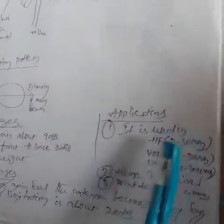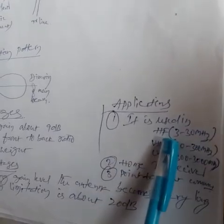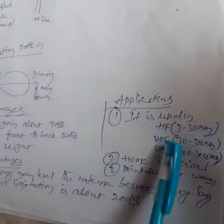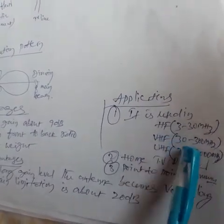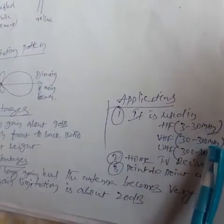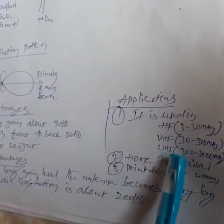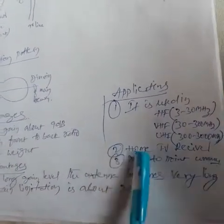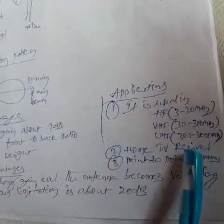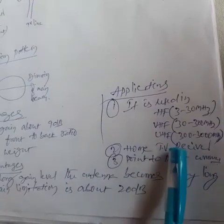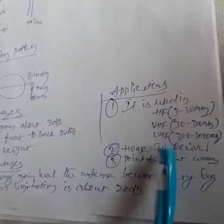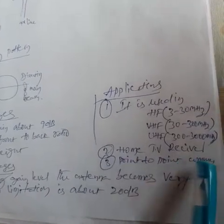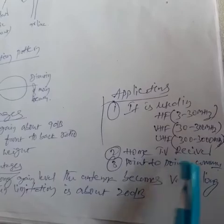Applications: the Yagi-Uda Antenna is used in high frequency (HF), which is 3 to 30 megahertz; VHF (very high frequency), which is 30 to 300 megahertz; and UHF (ultra high frequency), which is 300 to 3000 megahertz. It is also frequently used for home TV receivers. Third, it is used for point-to-point communication, which is why it is called a directional antenna.